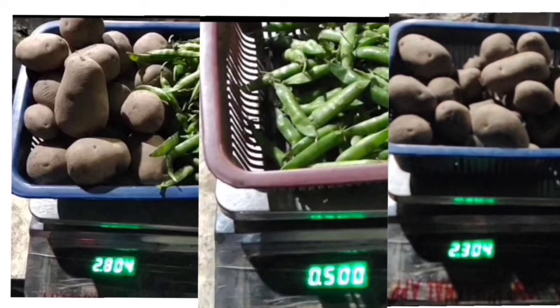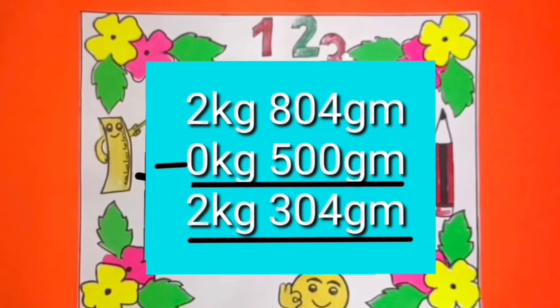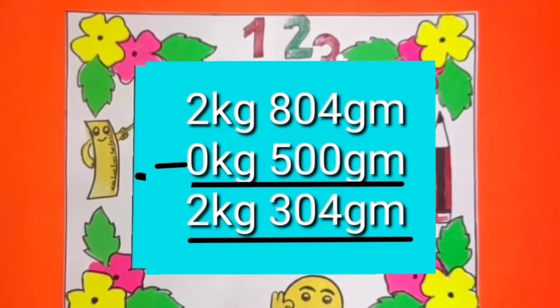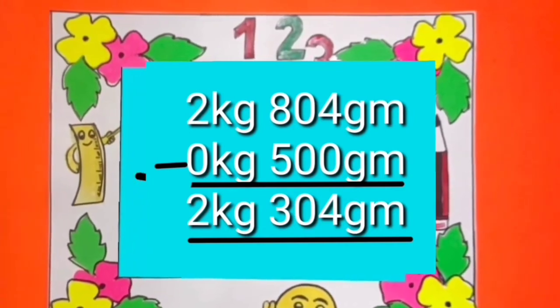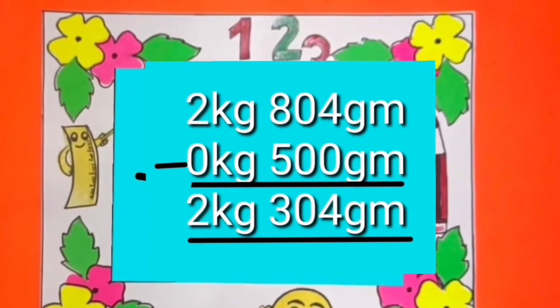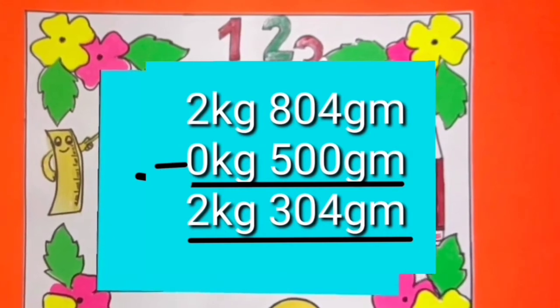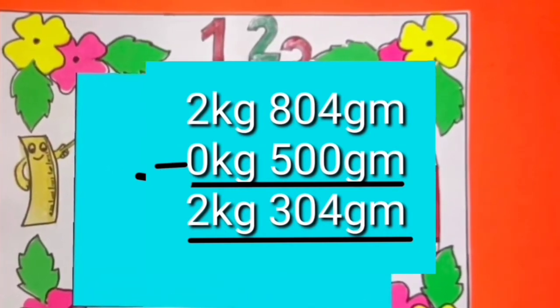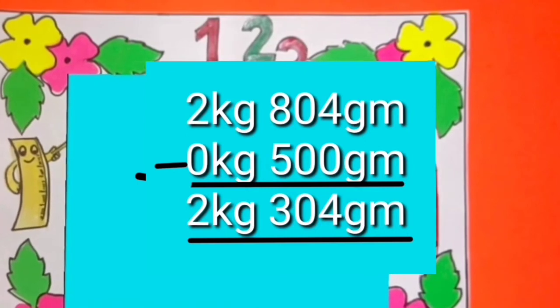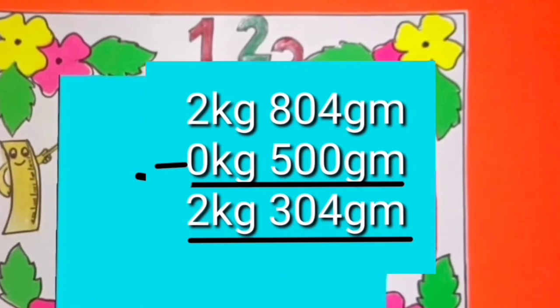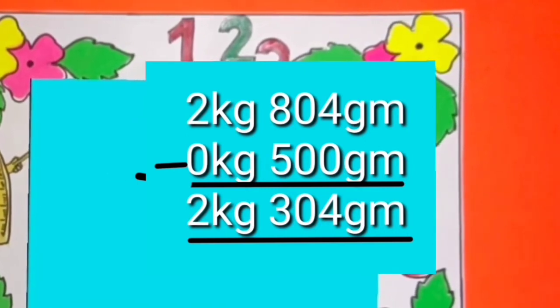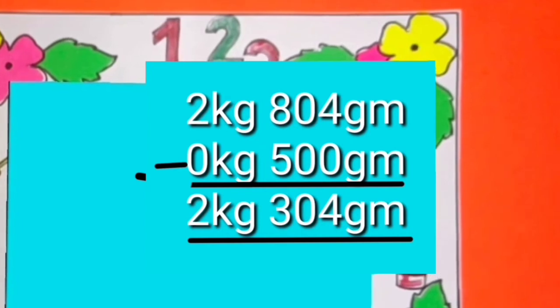Dear students, now we will solve this in a mathematical way. We will write kilograms under kilograms and grams under grams. After subtracting 500 grams from 2 kilograms and 804 grams, we get 2 kilograms and 304 grams.